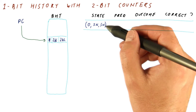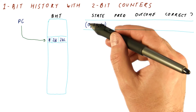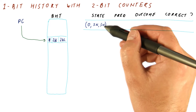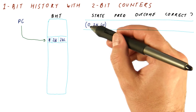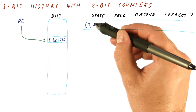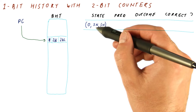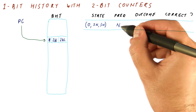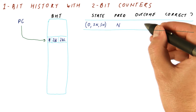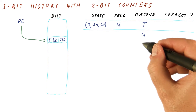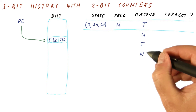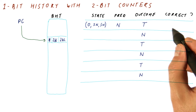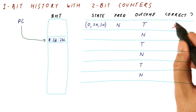The prediction in this type of predictor is formed by using the history bit to tell us which of the two predictors to use. Because the history is zero, we will be using the first of the two counters. It's saying strong not taken, so the prediction will be not taken. Let's say this is a branch where the outcome is taken, not taken, taken, not taken, etc. In this case, the prediction and the outcome differ, so we have an incorrect prediction.